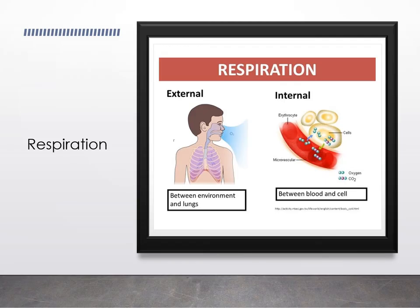Pulmonary ventilation refers to inhalation and exhalation — the external process of respiration. In inspiration, air moves into the lungs; in expiration, air moves out. If our lungs remain compliant and able to stretch, they expand and contract to move air, while the muscles of the thoracic cavity expand and contract to allow the lungs to inflate and deflate during external respiration.